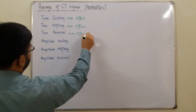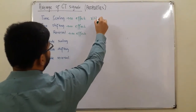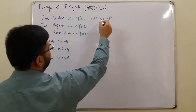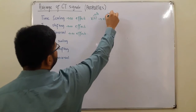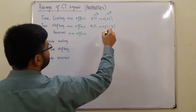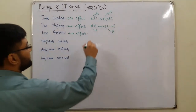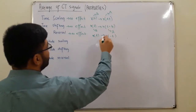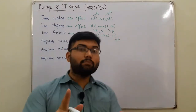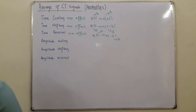Time reversal also has no effect. So if x(t) is the original signal, then x(αt) — the time-scaled version — has the same average. If x(t) has average A, then x(αt) also has average A. Similarly, the time-shifted version x(t - t₀) also has average A, and the time-reversed version x(-t) also has average A. Time transformations have no effect on the average value.